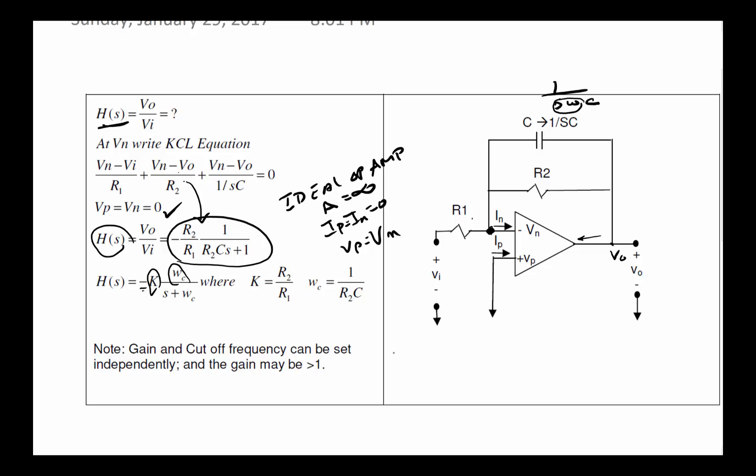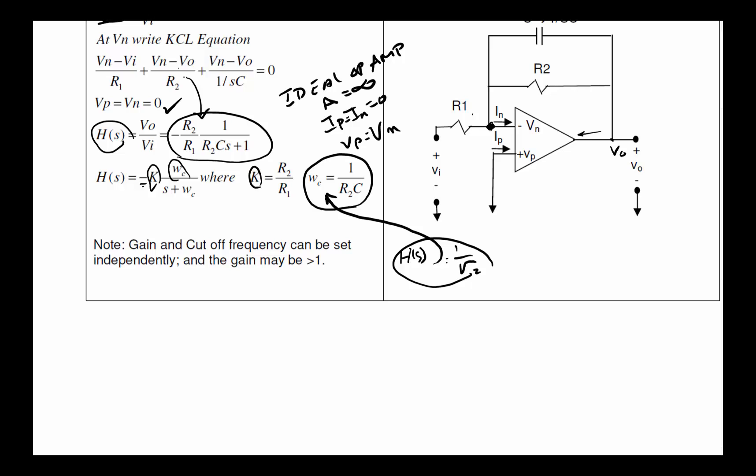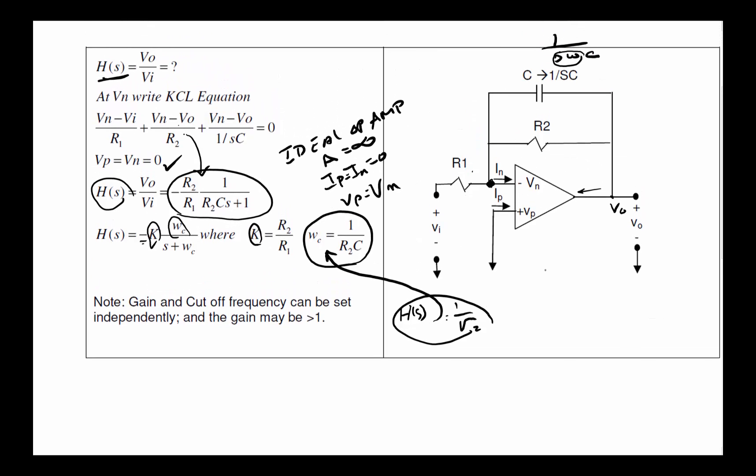We've got Omega_C which is the cutoff frequency. We find that by setting H(s) to half power, so if gain is one we can set it to half power, which means H(s) equals 1 over square root of 2. That would give us Omega_C, which in this case is 1/(R2*C), and the gain is R2/R1. That's basically a low-pass filter.